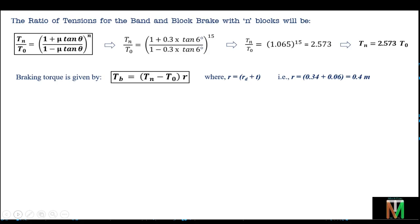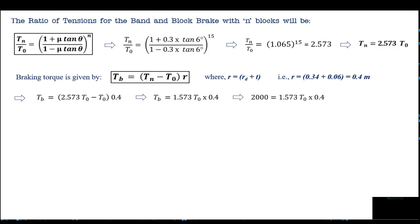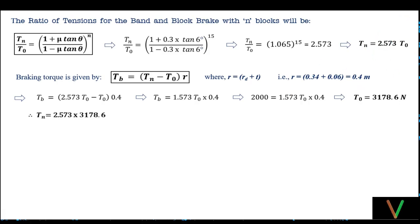Substituting the values of breaking torque and radius, Tb = (2.573·T0 - T0) × 0.4 = 1.573·T0 × 0.4. Substituting Tb = 2000: 2000 = 1.573·T0 × 0.4, which gives T0 = 3178.6 N. Substituting T0 into the tension ratio equation gives Tn = 2.573 × 3178.6 = 8178.5 N.